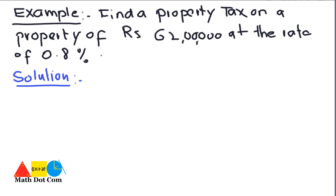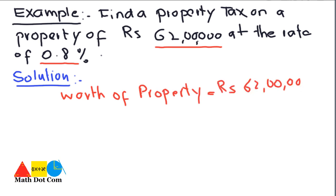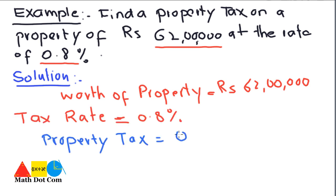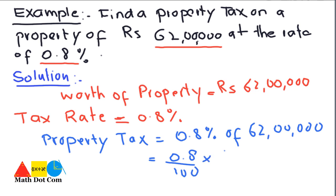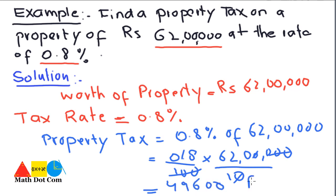Now let's do a full example. Find the property tax on a property worth Rs. 62,00,000 at a rate of 0.8%. Here the assessed value is Rs. 62,00,000 and the tax rate is 0.8%. The property tax is calculated as (0.8 / 100) × 62,00,000 = 49,600. So Rs. 49,600 is the property tax that will be levied on a property with an assessed value of Rs. 62,00,000.